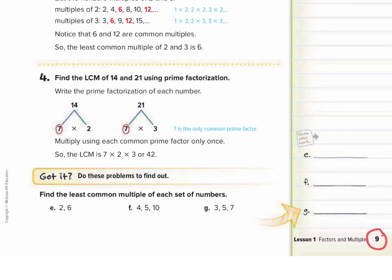We're going to start on page nine, and today we're going to be learning about least common multiples. Multiples of numbers are larger than the number — it's like the number is being multiplied.